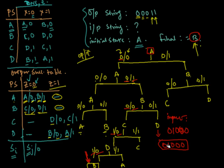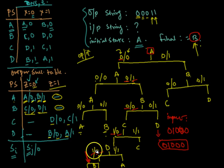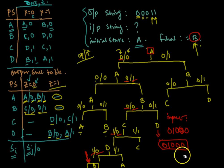This is how you find the input string against a given output string for an information lossless machine. I hope this tutorial is helpful. Try some additional examples from your textbook, and if you face any problems, feel free to email me. Thank you very much.